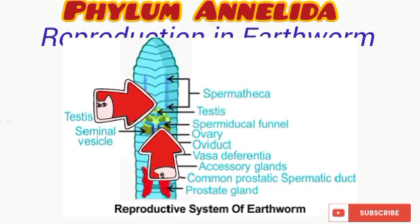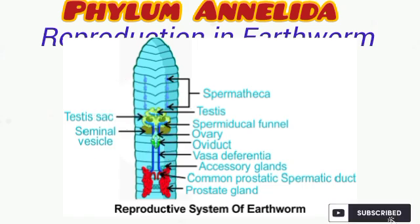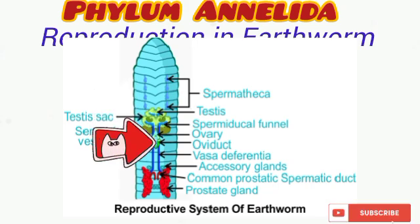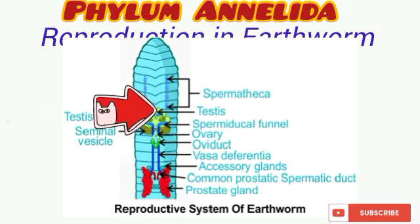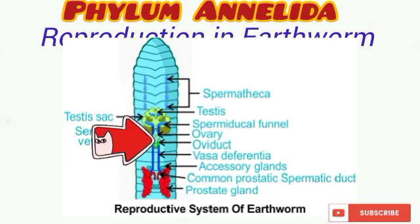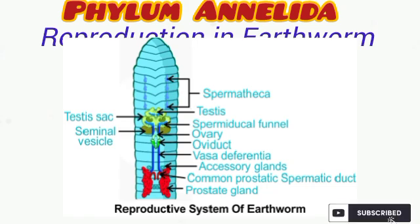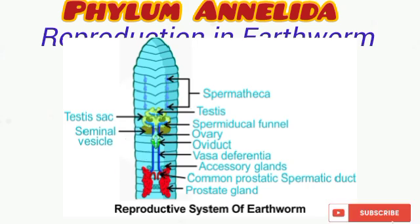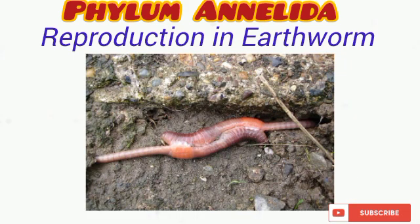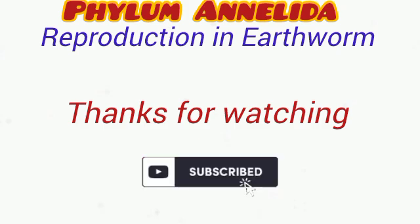Earthworms are hermaphroditic, possessing both male and female organs in the same organism. In Lumbricus, the reproductive system is found in segments 9 to 15. The male reproductive system comprises the testes and ducts; spermatozoa are produced in the testes, matured in the seminal vesicles, and transported through the sperm duct to the genital pore in segment 15. Eggs are produced in the ovaries, emptied into the coelomic cavity, and transported to the genital pore in segment 14. Though hermaphroditic, earthworms do not self-fertilize — cross-fertilization occurs between two earthworms. The clitellum produces mucus that joins the two earthworms together during copulation.